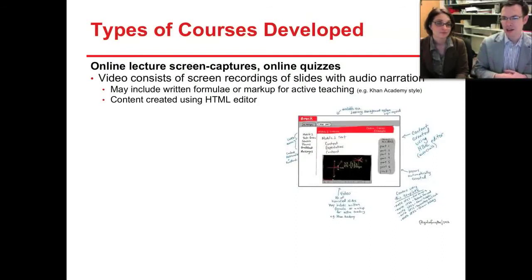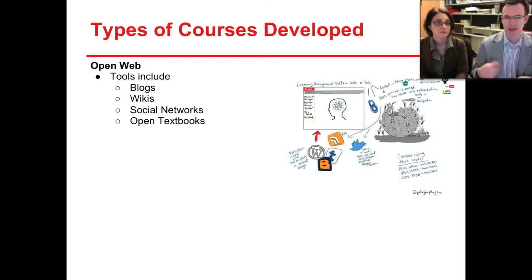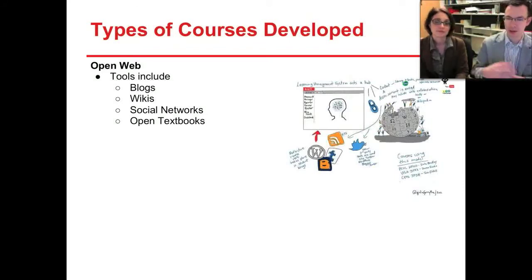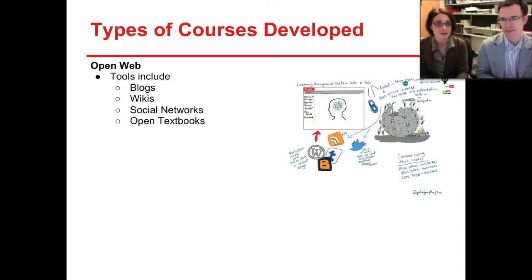This format also has online quizzing to allow some evaluation of students through a computer. And then there's the open web style — using our LMS for what it does best, but then linking to the rest and having blogs, wikis, social networks, and other open tools employed in the learning, bringing it all together through a conscientious instructor curating that content, with grades and other important things kept on the Brock side while taking advantage of the open web. We call this a spectrum because there are a lot of elements taken from each of these three different types, and we just want to be able to categorize them for simplicity.